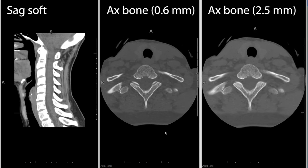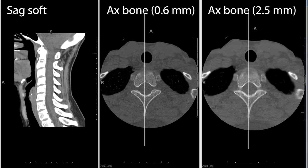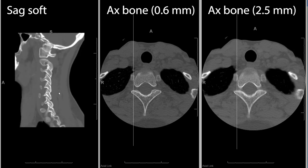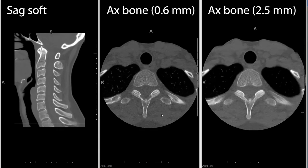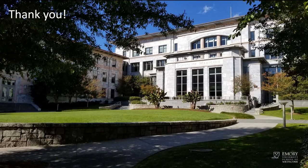That's usually my last step of the study. Here we've seen a spine that's pretty normal, with a little bit of degenerative change at C1-C2 and a little bit of facet degeneration on either side, but not much in the way of traumatic injuries. For a cervical spine CT, definitely use your reformats to your advantage, make separate passes in your soft tissue windows to look at the spinal canal and extra-spinal soft tissues, and use your thin axial slices for troubleshooting. Thanks for your attention today. Please like our channel and subscribe for future updates.